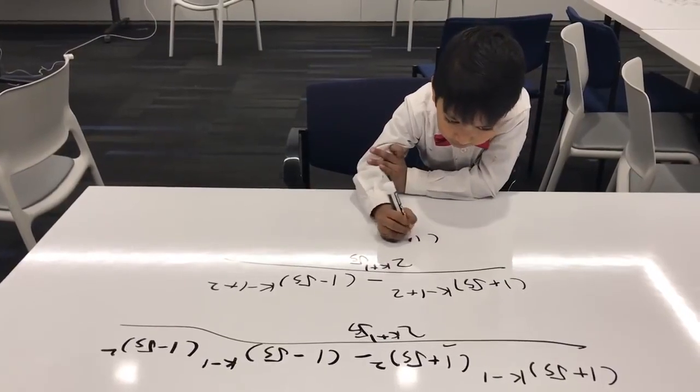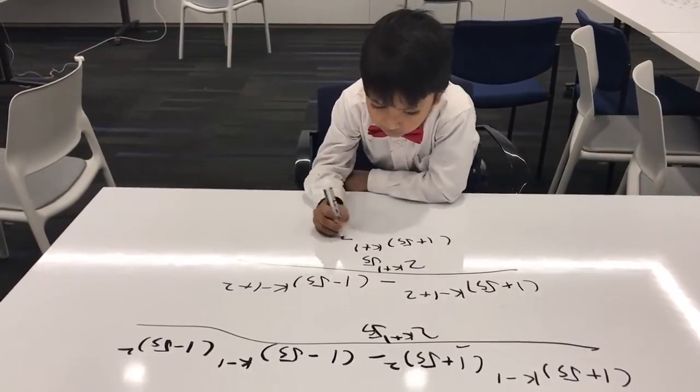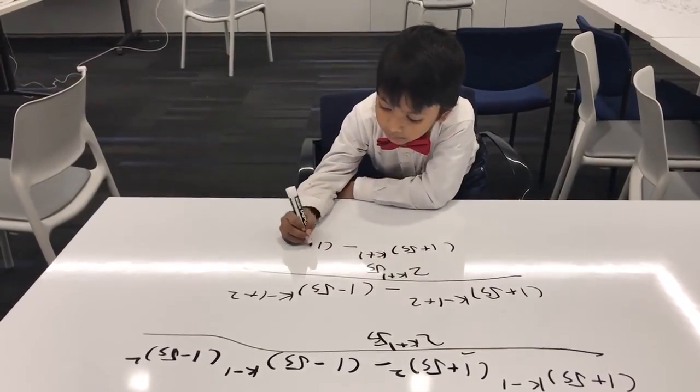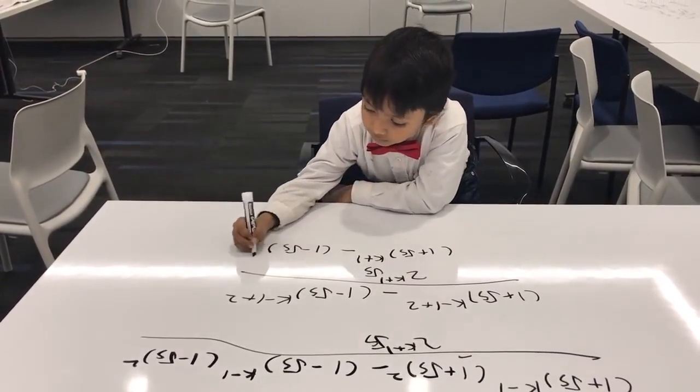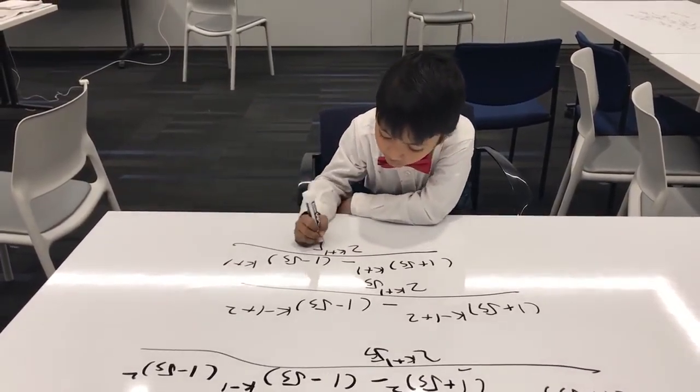So that gives us 1 plus square root of 5 raised to k plus 1, minus 1 minus square root of 5 raised to k plus 1, over 2 to the k plus 1, square root of 5.